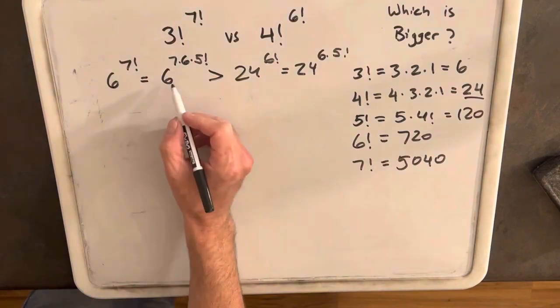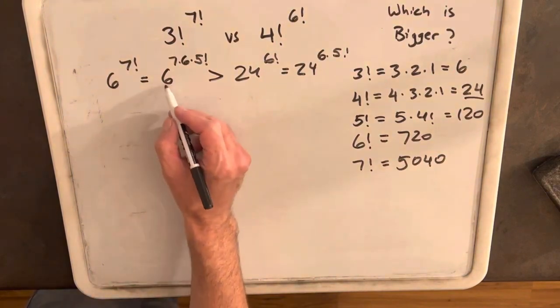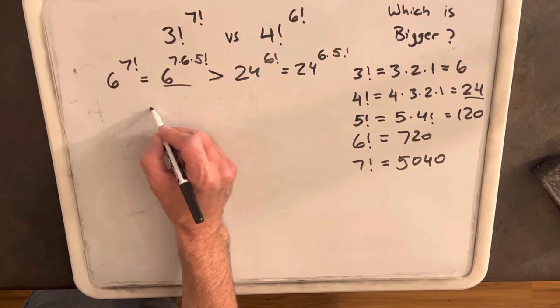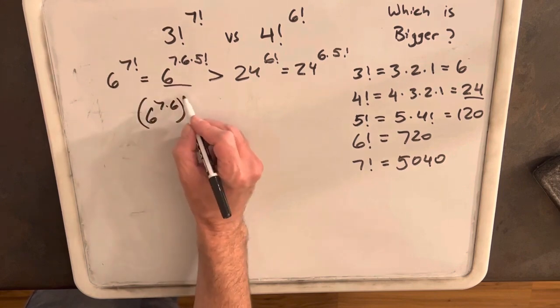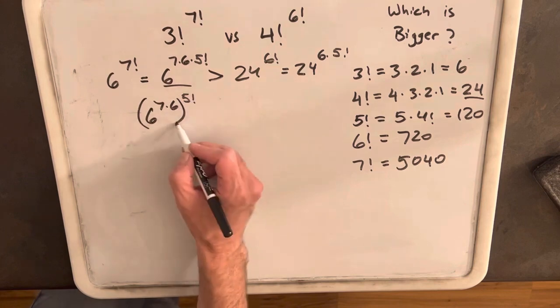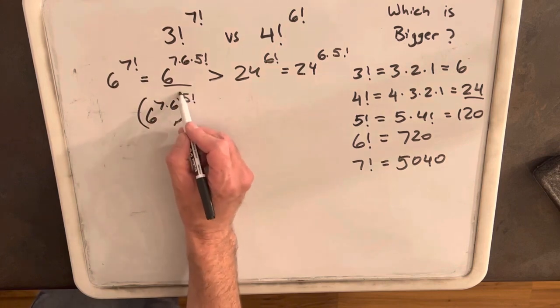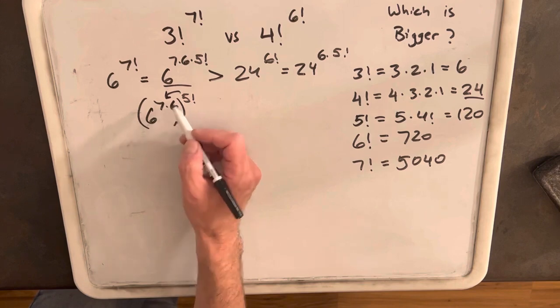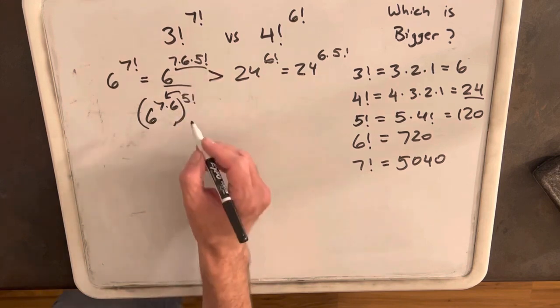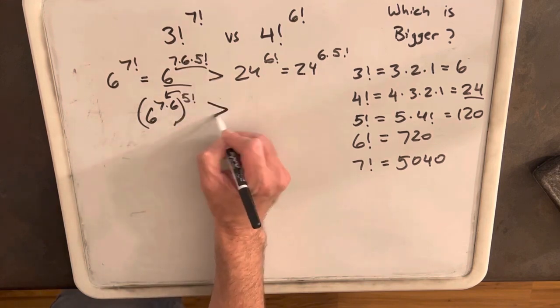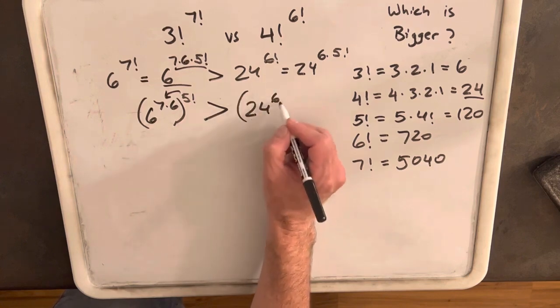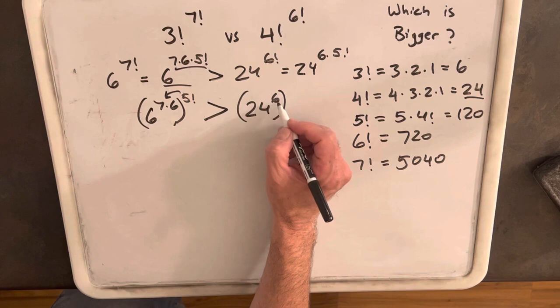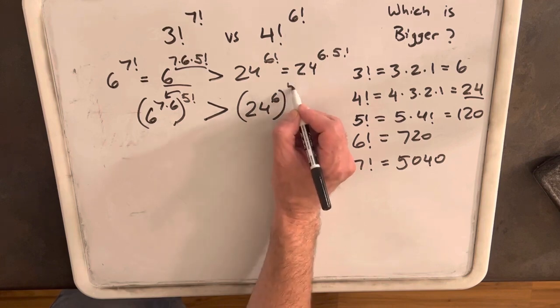And then what that will allow me to do is I can rewrite this, our left side, as 6 to the 7 times 6 to 5 factorial. Just noticing if I were to go back and use this property in reverse, we'd get the same thing here. So we're thinking this is going to be greater than 24 to the 6, using the same rule, bringing this part of the exponent into the parentheses.